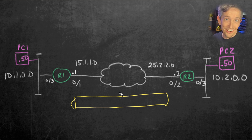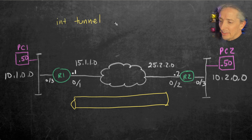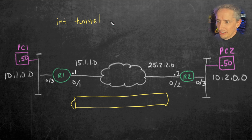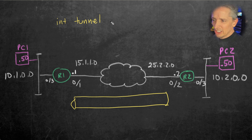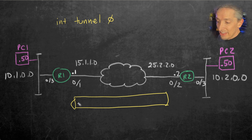The way we would do that on a Cisco router is we'd go into configuration mode, and then we'd specify interface tunnel, and then specify the tunnel interface that we want to create. If you don't have any tunnel interfaces, the numbering is from zero to 11 billion — it's a lot. So you can just say tunnel zero to start off, and that puts us into interface configuration mode for this tunnel.